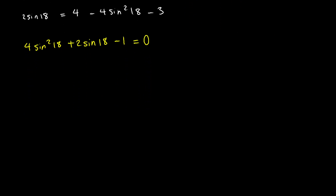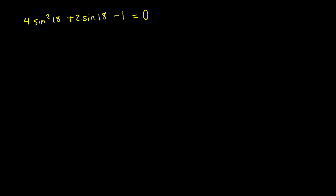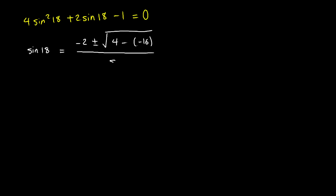It is clear that this is a quadratic equation in terms of sine of 18, so I can use the quadratic formula to solve for sine of 18. This gives sine of 18 equals negative 2 plus or minus the square root of 4 minus negative 16, all over 2 times 4, which is 8. This simplifies to negative 2 plus or minus root 20, divided by 8.